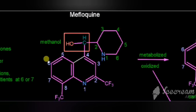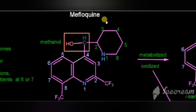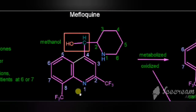Look at the structure of mefloquine. It is having a quinoline nucleus, and in the 4th portion it is substituted with substituents — specifically methanol at the 4th portion. With the carbon of methanol, piperidine is attached, and it is having 2 trifluoromethyl groups — 2 CF3 groups present at the 2nd and 8th positions.